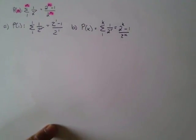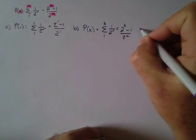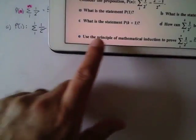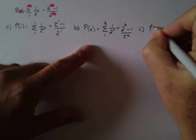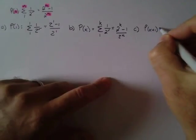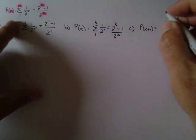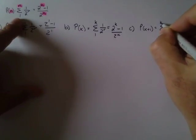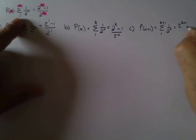The third question, part C, asks: what is the statement when N equals K+1? Wherever I see N, I'm going to put in K+1. So P(K+1) equals: the sum from R=1 to K+1 of 1 over 2^R equals (2^(K+1) minus 1) divided by 2^(K+1). So those are the first three questions — just stating the proposition.